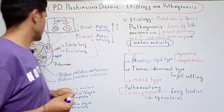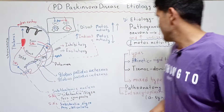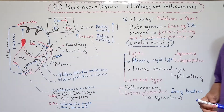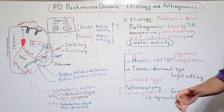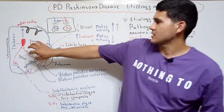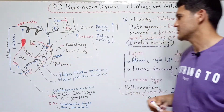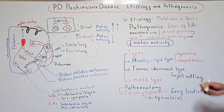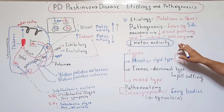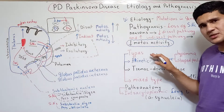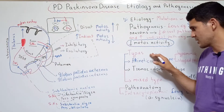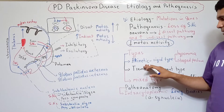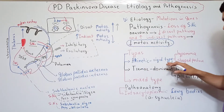All of the clinical symptoms are due to the loss of the Substantia Nigra Pars Compacta neurons. The net result is decreased motor activity. There are three main types of Parkinson's disease.